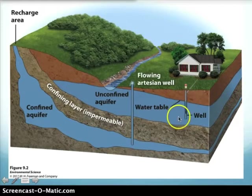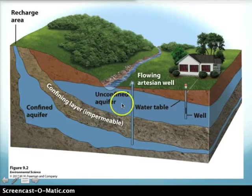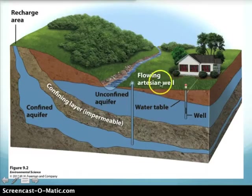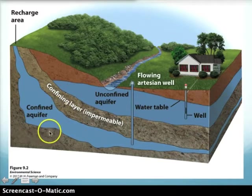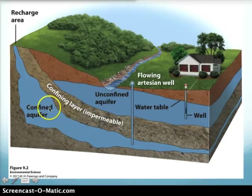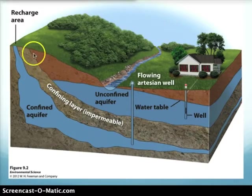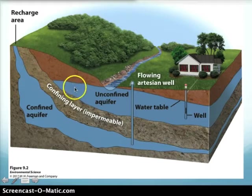There are two kinds of aquifers. An unconfined aquifer is basically porous rock covered by soil; water can more easily enter it. A confined aquifer is surrounded by a layer of impermeable rock or clay on each side, making it more difficult for water to enter and leave. This brings us to the term recharge — how water percolates down through the soil into the aquifer.